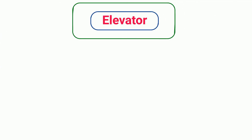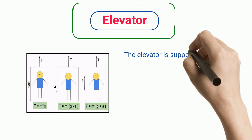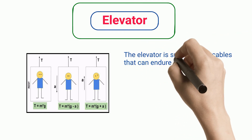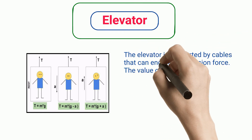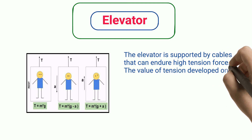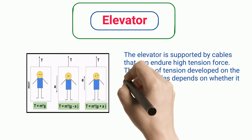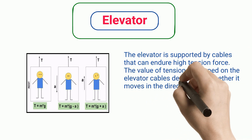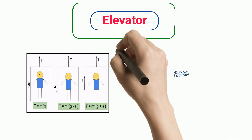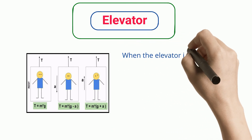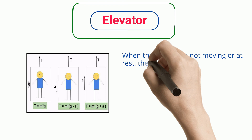Elevator. The elevator is supported by cables that can endure high tension force. The value of tension developed on the elevator cables depends on whether it moves in the direction of gravity or against gravity. When the elevator is not moving or at rest, the tension is Mg.